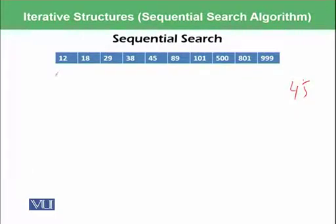So we will start from here from 12 and we will compare whether this 45 which we want to search is equal to 12 or not. And we will keep doing it until we find 45. If we want to search 800, that 800 cannot be found in this list and when this list ends this algorithm will finish.